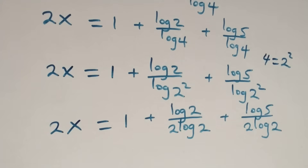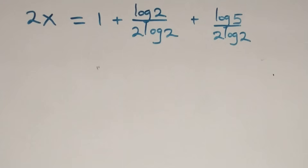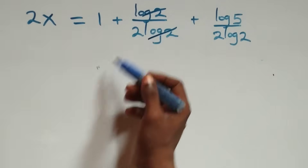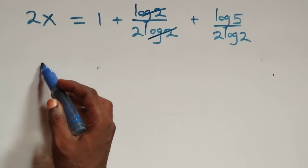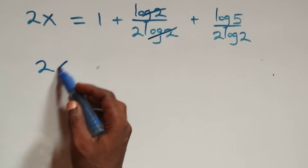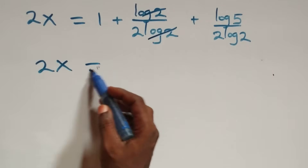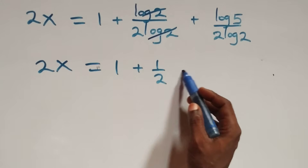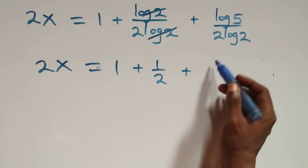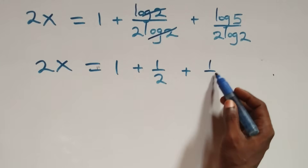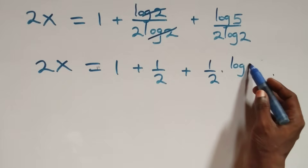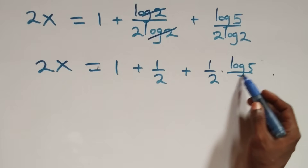Log two cancels each other and we are left with one half. That is, two x equals to one plus one half, plus one half times log five over log two.